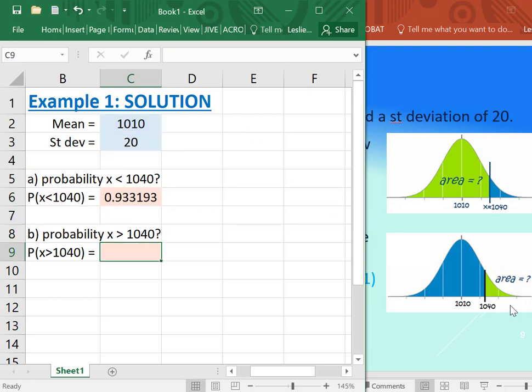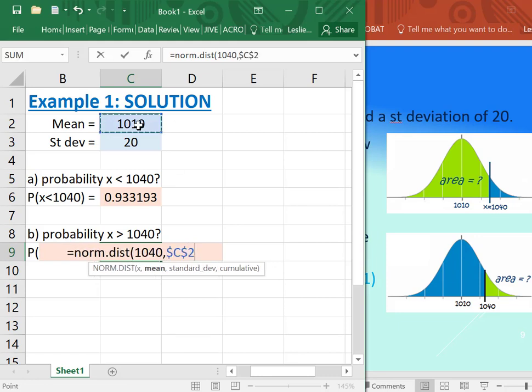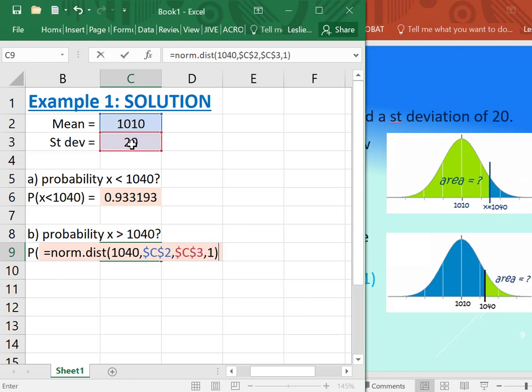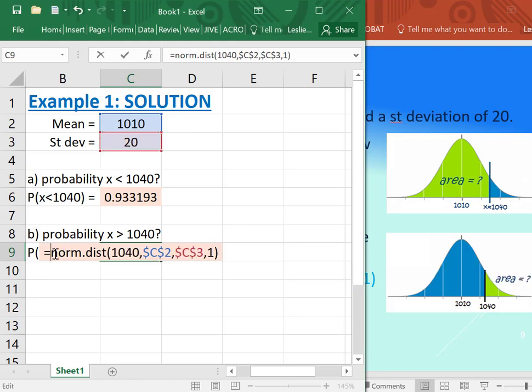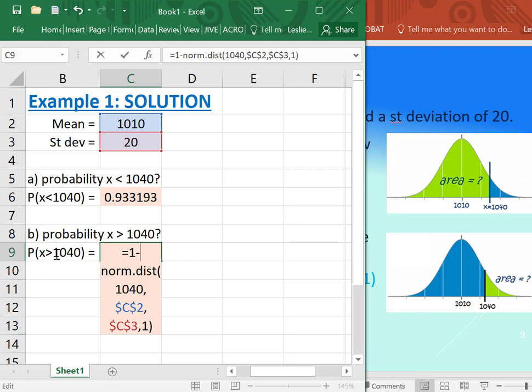Now what is the probability that x is above 1040? Well, two ways of doing this. You can either retype it: equals norm.dist, 1040, 1010, 20, and the one, and take one minus that.